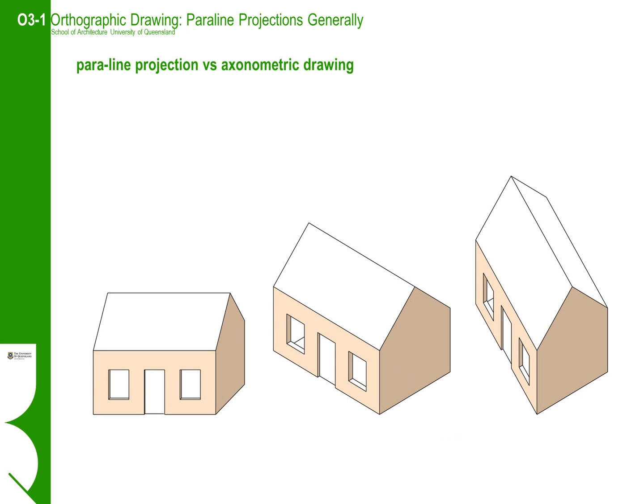You will often hear the terms parallel projection and axonometric drawing or projection used interchangeably, as the term axonometric is a derivative of 'to measure along axis', which is a reference to the fact that parallel or axonometric drawings are to scale. The misuse of the term axonometric is that people often refer to it as a particular type of parallel line view or projection, which it is not. It is a broad description to describe a family of different measured three-dimensional view projections.